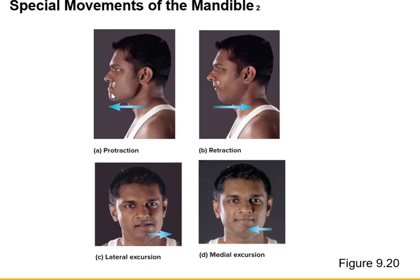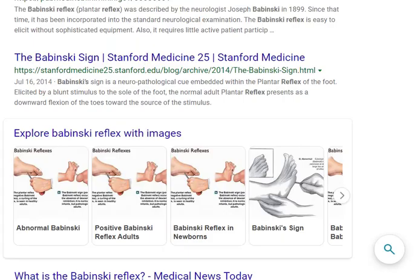Protraction of your mandible causes what's called a pugnacious face. Retraction is pulling your jaw way back. We also have lateral excursion — you can push your jawbone out to one side away from the midline and pull it to the other side, wagging your jaw in both directions.